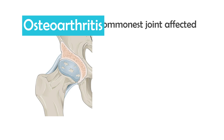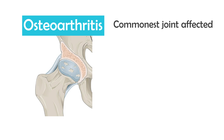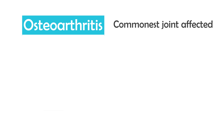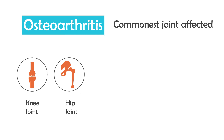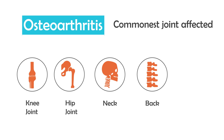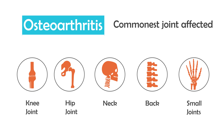Now, in the Indian scenario, what we observe is the majority of our patients — the commonest joint affected is the knee joint, followed by the hip joint. Osteoarthritis also happens in the neck and back, resulting in cervical or lumbar spondylosis. Sometimes in certain unfortunate patients, it does affect the small joints of the hand.